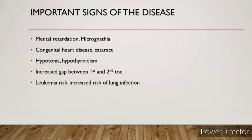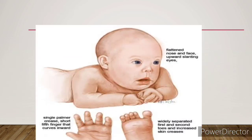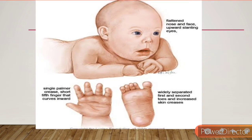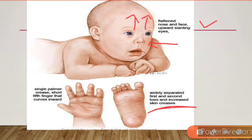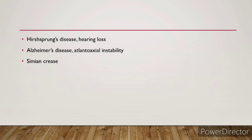The leukemia risk in Down syndrome — the most common leukemic type is ALL. Duodenal atresia can also occur. In the picture you can see the flattened nose and face, the saddle toe with widely separated first and second toes, and single palmar creases with a short fifth finger that curves inward.